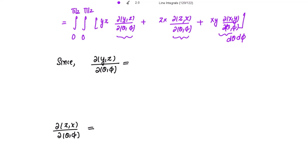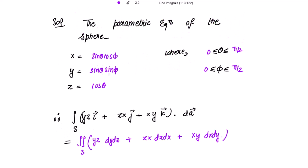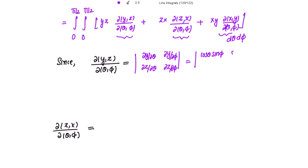Let's calculate ∂(y,z)/∂(θ,φ), which equals the determinant of [∂y/∂θ, ∂y/∂φ; ∂z/∂θ, ∂z/∂φ]. Differentiating y with respect to θ gives cos(θ)sin(φ); with respect to φ gives sin(θ)cos(φ). Differentiating z with respect to θ gives −sin(θ); with respect to φ gives 0. So this equals 0 minus (−sin²(θ)cos(φ)) = sin²(θ)cos(φ).